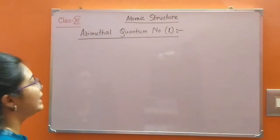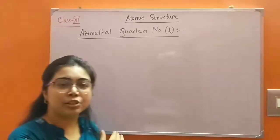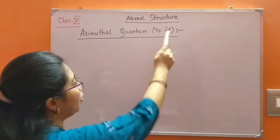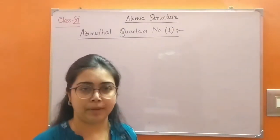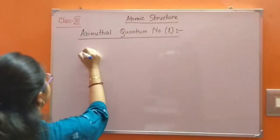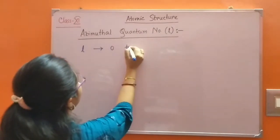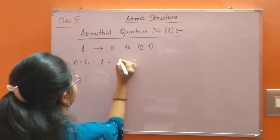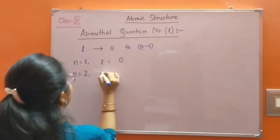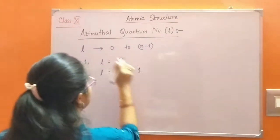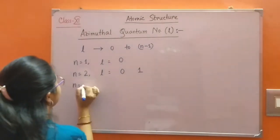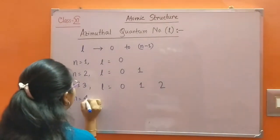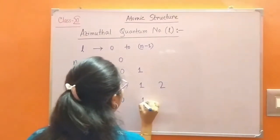Now, azimuthal quantum number. It is represented by L, and it is also known as the subsidiary or secondary quantum number. The value of azimuthal quantum number L depends on the principal quantum number N, so the value of L is 0 to N minus 1. If N equals 1, L equals 0. If N equals 2, L equals 0 and 1. For N equals 3, L equals 0, 1, 2. For N equals 4, L equals 0, 1, 2, 3.